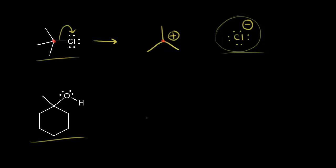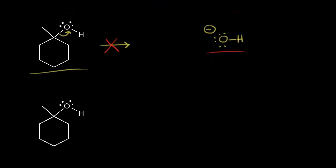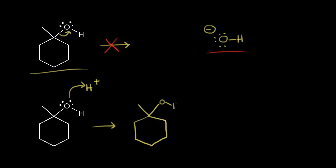Next, let's look at this alcohol. If we approach it the same way and say the first step is loss of a leaving group — those electrons coming off onto the oxygen — that would give us the hydroxide ion. But we know from our pKa table that hydroxide is not a good leaving group; it's not as stable an anion as the chloride anion. So that's not the first step of this mechanism. We need to make a better leaving group, and we can do that by using a proton source — an acid in solution, say H plus. The first step would be to protonate our alcohol, so the alcohol acts as a base and picks up a proton.